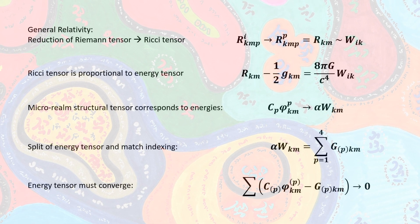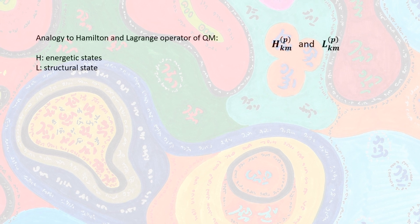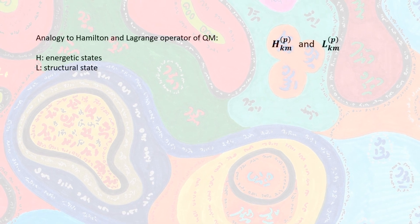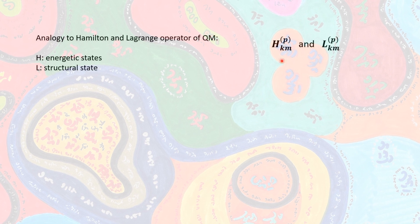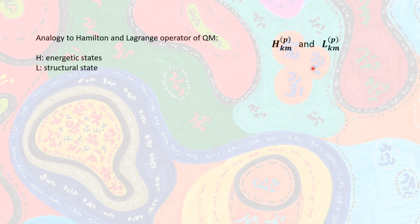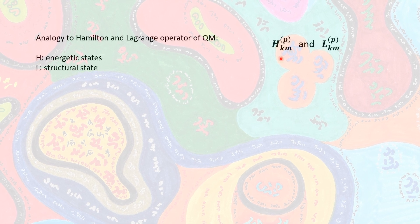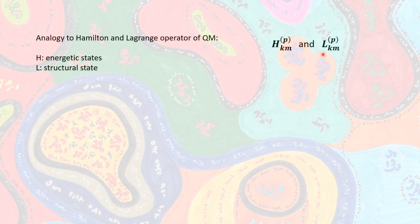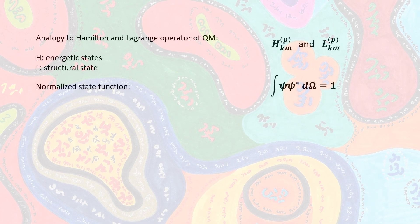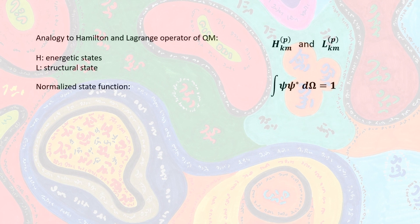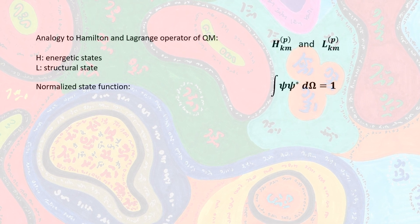Borrowing formalisms for both realms — that of energy and that of structure — we can describe them by state operators which are elements of an abstract Hilbert space. We define linear operators H and L in analogy to the Hamilton and Lagrange operators in quantum mechanics. Heim used the same letters to underline this analogy: H relates to the energetic state and L to the structural state of spacetime. We then define a normalized state function psi, which can be interpreted as a state of probability of the quantized spacetime.